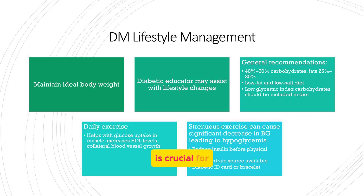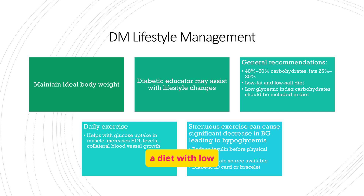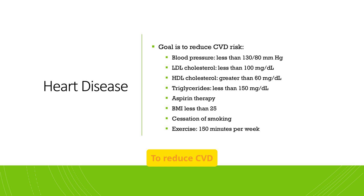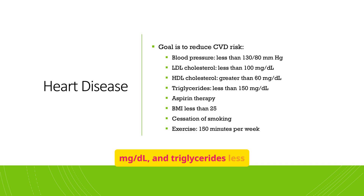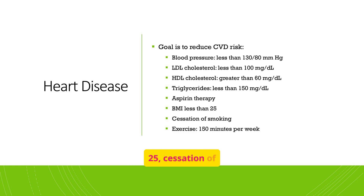Lifestyle management is crucial for diabetes. Maintain ideal body weight, consult a diabetic educator, and follow a diet with low glycemic index carbohydrates. Daily exercise is important for glucose uptake and blood vessel growth. To reduce CVD risk, aim for blood pressure less than 130/80 mmHg, LDL cholesterol less than 100 mg/dL, HDL cholesterol greater than 60 mg/dL, and triglycerides less than 150 mg/dL. Aspirin therapy, BMI less than 25, cessation of smoking, and regular exercise are also important.